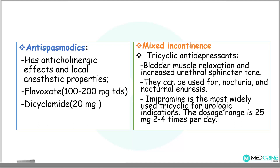In management of mixed incontinence, tricyclic antidepressants help relax the bladder detrusor muscle and increase urethral sphincter tone. They are used for nocturia and nocturnal enuresis. The most commonly used drug is imipramine, which is the most widely used for urologic indications, at a dose of 25 mg two to four times a day.